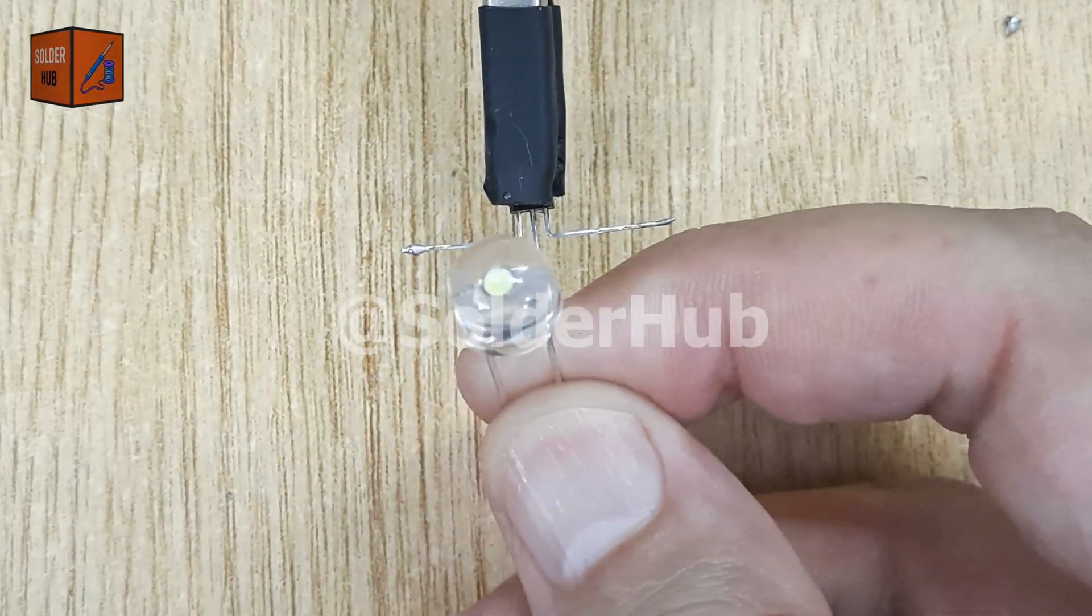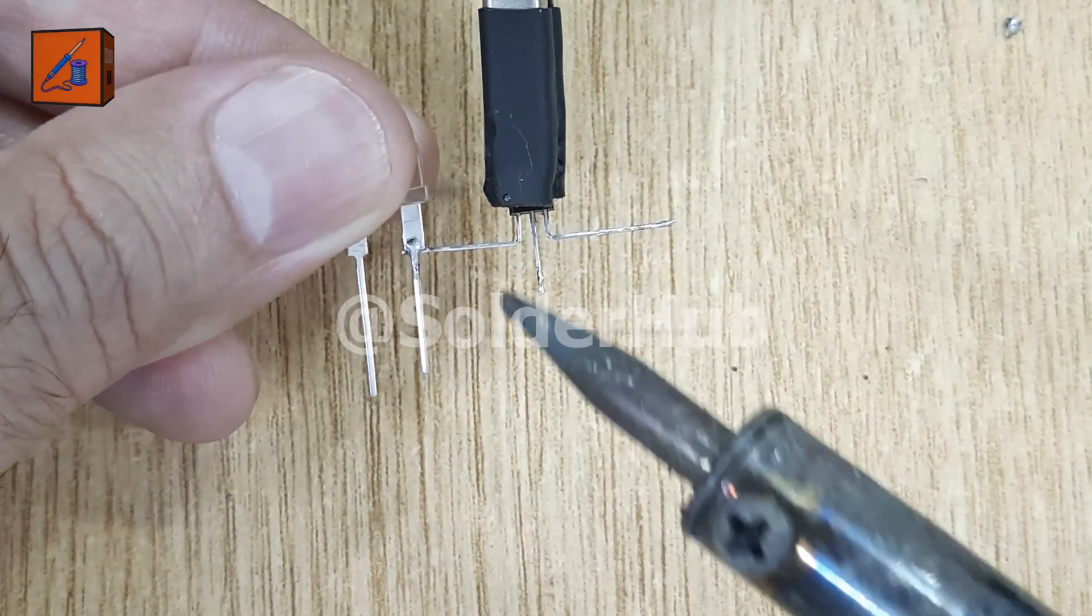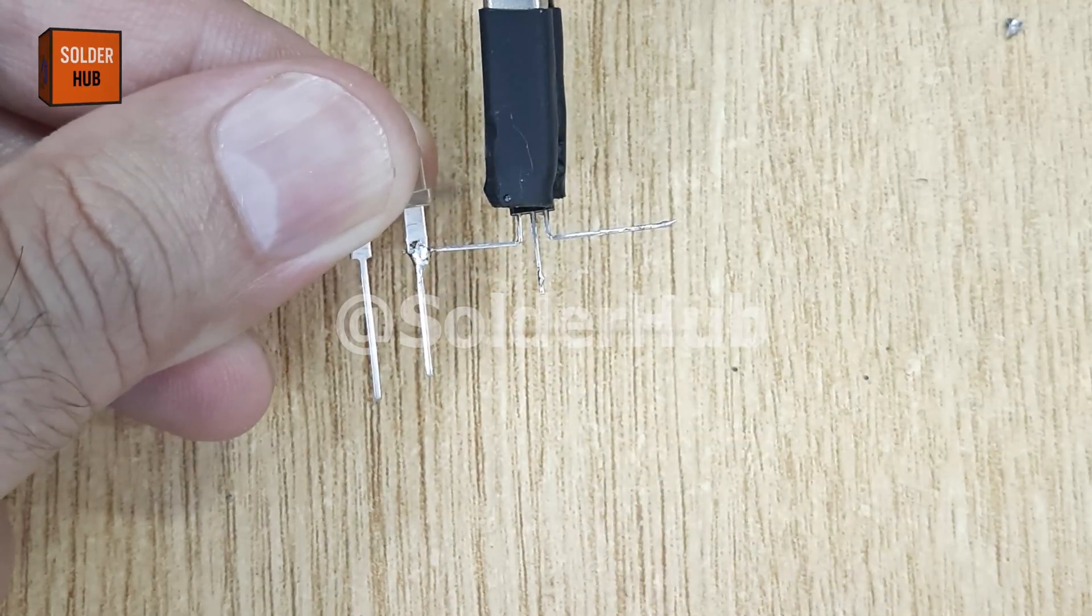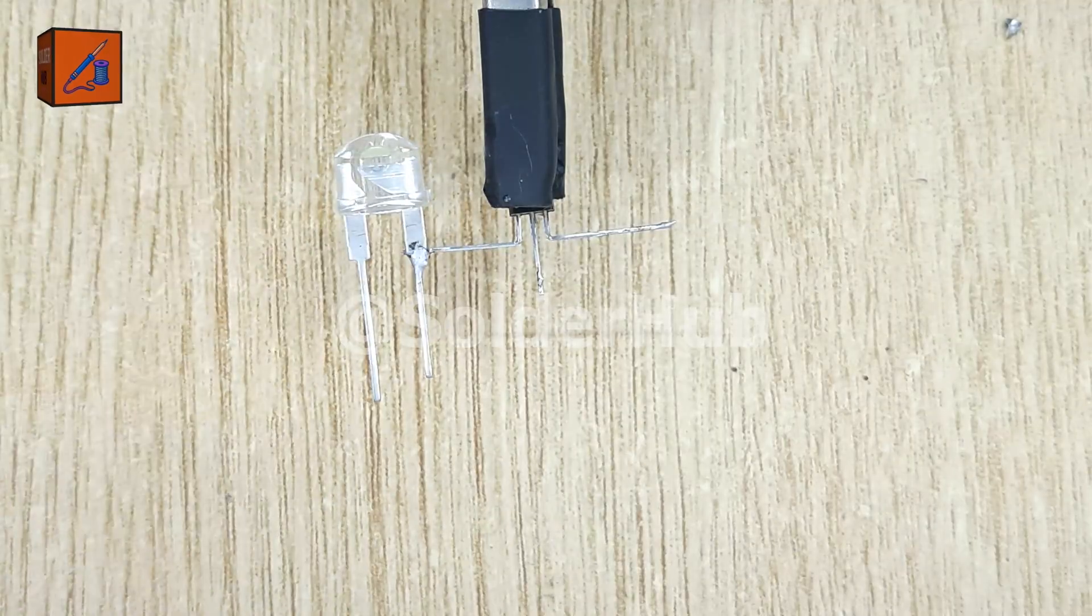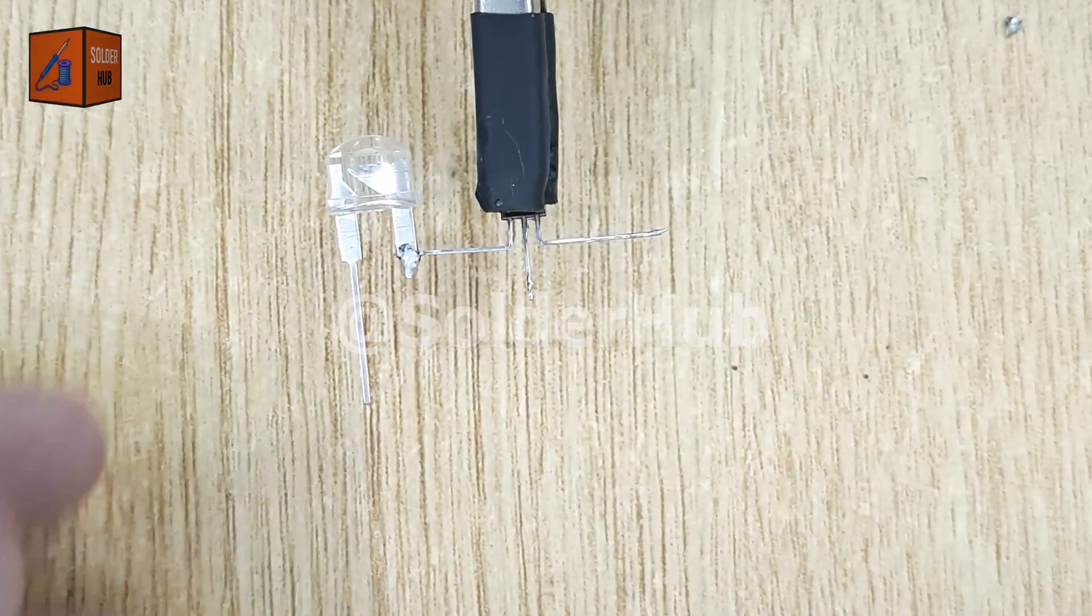Next I'll take a 3V LED. This will act as our light source, representing a streetlight in this demo. I'll solder its negative pin directly to the collector pin of the transistor, making sure the connection is clean. To avoid clutter, I'll trim the extra length of the LED's pin.